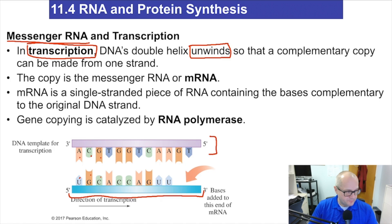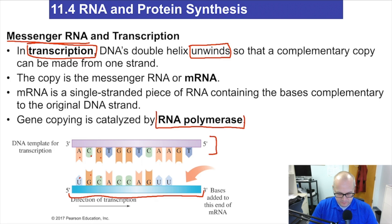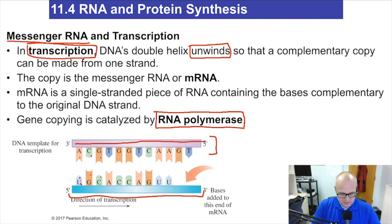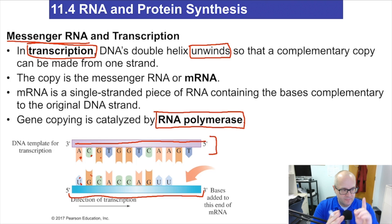mRNA is a single strand, and this whole system is catalyzed by an enzyme called RNA polymerase — it's what's making the RNA, taking the nucleotides and bonding them together covalently at the 5' to 3' phosphodiester bond. The DNA remains covalently bonded throughout. Uracil finds adenine and guanine finds cytosine. They interact with each other because their bases line up the hydrogen bonds perfectly — it's always hydrogen bonding that dictates who goes with who.